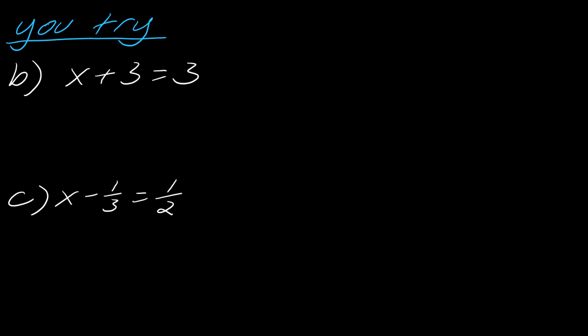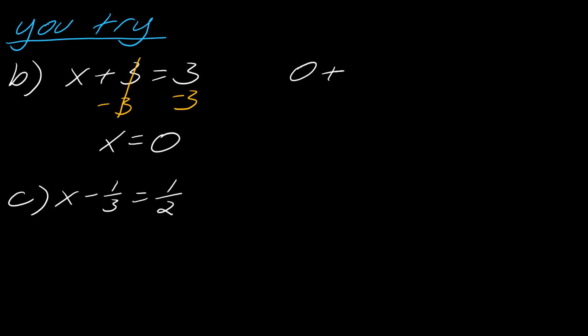I have two more examples — pause and hit play when ready. For example b, x plus 3 equals 3. I subtract 3 from each side to get x by itself. The 3's drop out, and I'm left with x equals 0. You can confirm: 0 plus 3 does indeed equal 3.